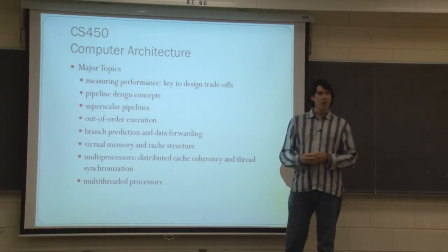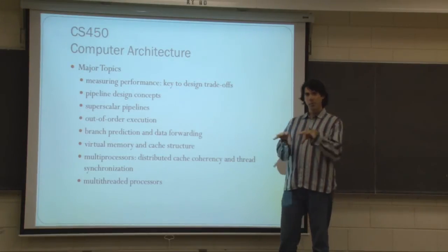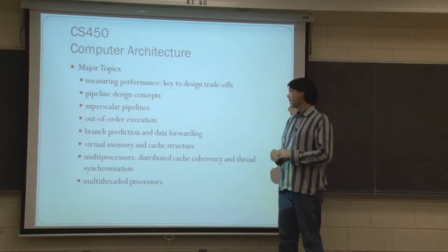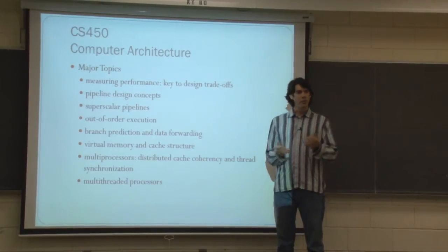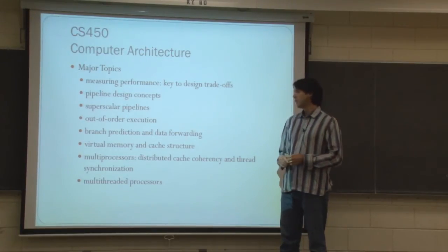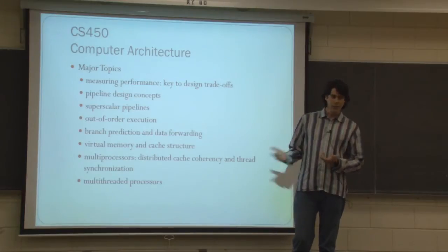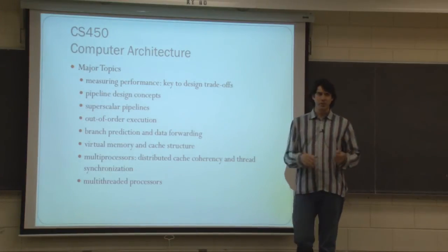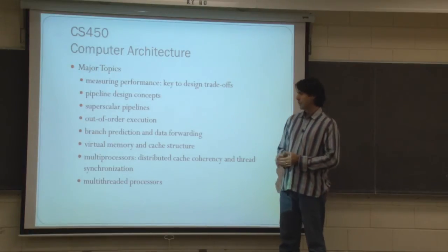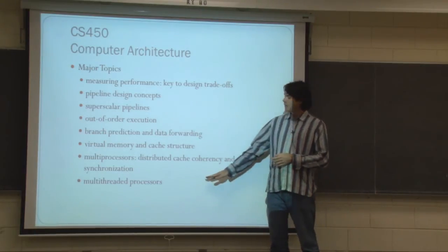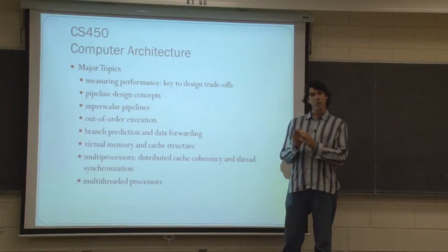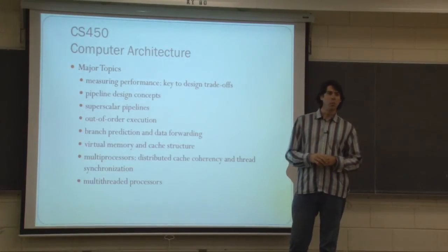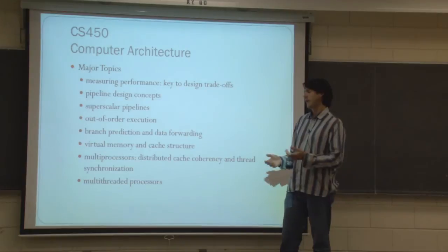Kind of the fun stuff, we'll learn about multiprocessors. So when you've got multiple cores or even multiple chips, how do they share memory between their caches? And that's the cache coherency problem. And also, this is related to the concurrent programming, how do you synchronize threads between processors? So you'll learn a bit about the hardware involved in that, and also multi-threaded processors. So when you have one core that can execute more than one thread at the same time, how does that happen?